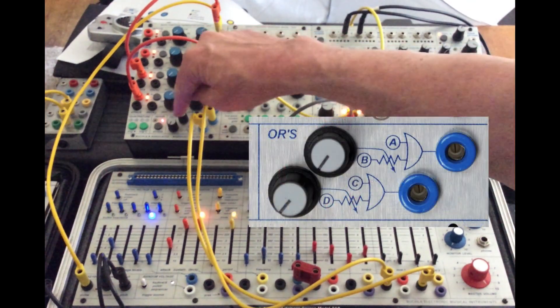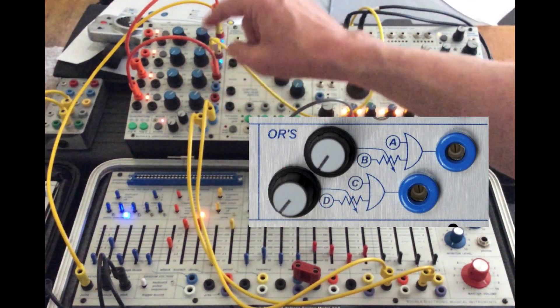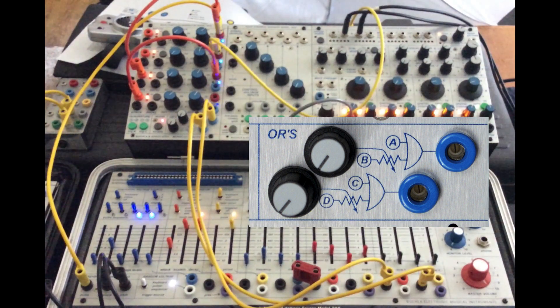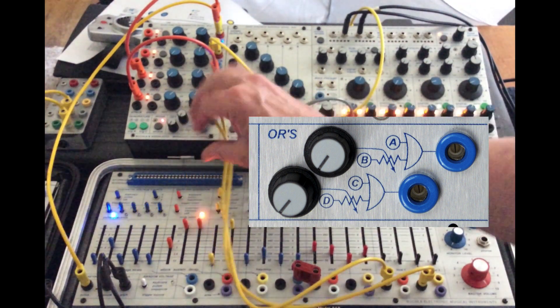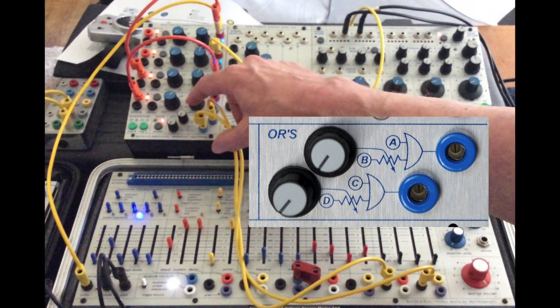I'd like to look at the ORS function on the Buchla 281E Quad Function Generator. They basically blend control voltages.